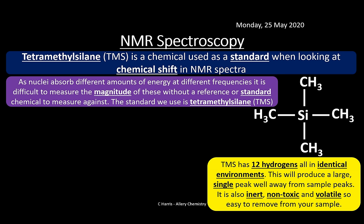TMS has silicon in the middle with four methyl groups surrounding it — 12 hydrogens in total, all identical. In the NMR machine, this gives a really strong single peak, with no polarity, well away from any other peaks in the spectrum. TMS is also inert and non-toxic (important given green chemistry principles), and it's volatile so it can be removed from the sample after testing.